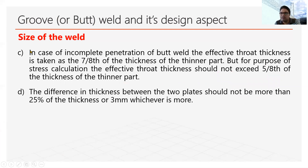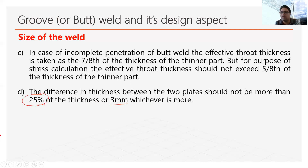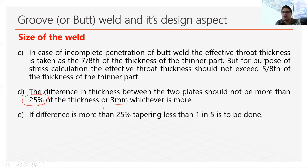When joining two plates in groove welding, it is desirable that both plates have the same thickness. But if there is a difference, IS code states that the difference in thickness between the two plates should not be more than 25% or 3 mm, whichever is more. If the difference exceeds 25%, the thicker part is tapered to match the thickness of the thinner part.